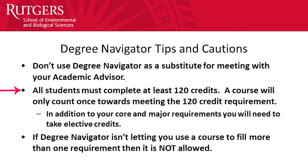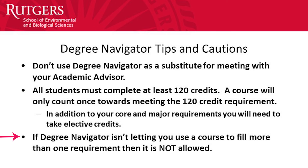All students at Rutgers School of Environmental and Biological Sciences will need to complete at least 120 credits to graduate. This means that in addition to filling your major and core requirements, you'll be able to take some elective courses or maybe add a minor. Let the Green Navigator be your guide as to when you can use a course to fill multiple requirements. If it isn't allowing you to use a course to fill more than one requirement, then double counting is not allowed. If you think you should be able to use a course in a particular area and it's not showing up, go see an advisor for clarification.